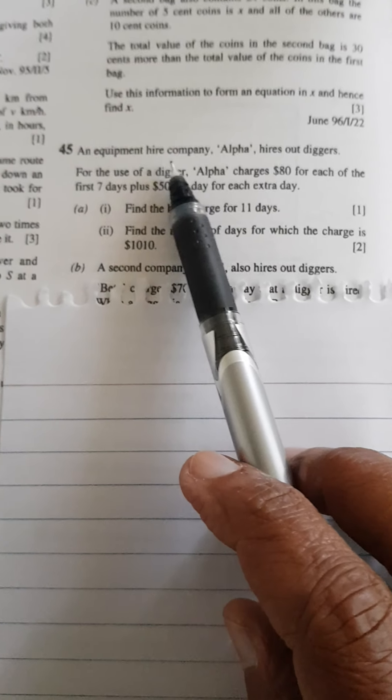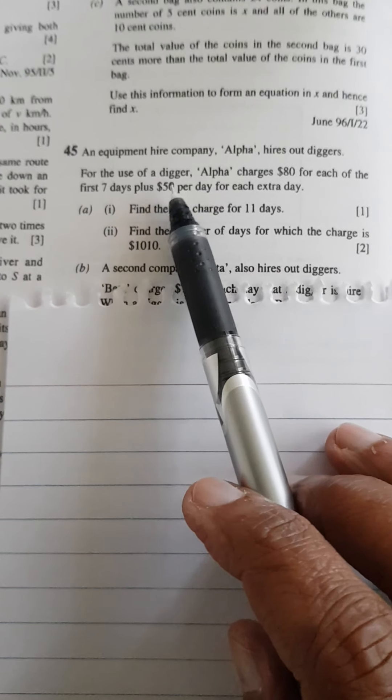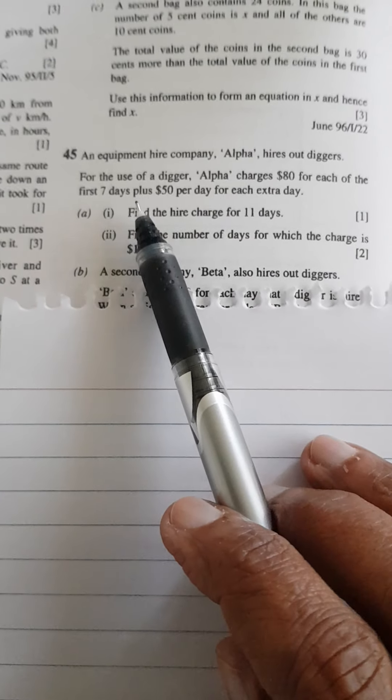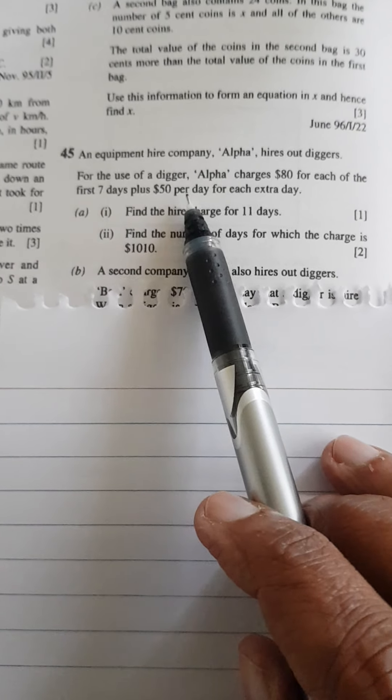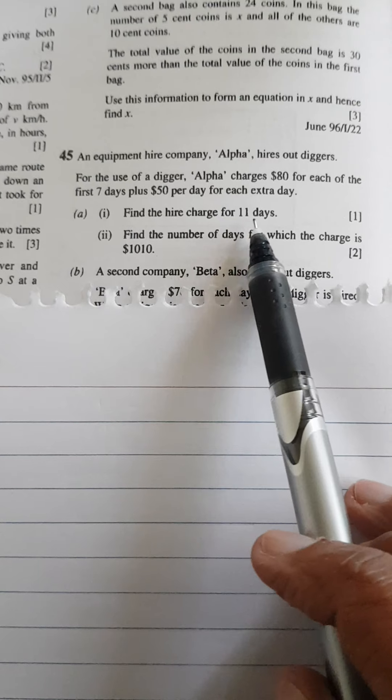Let's take a look at this question now. An equipment hire company, Alpha, hires out diggers. For the use of a digger, Alpha charges $80 for each of the first 7 days, plus $50 per day for each extra day. Find the hire charge for 11 days.